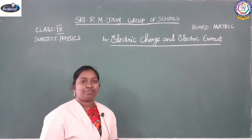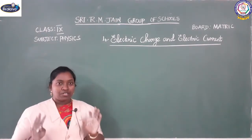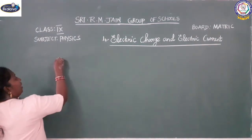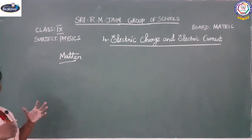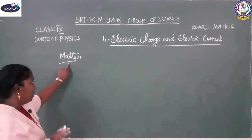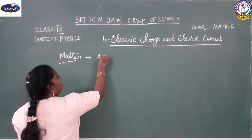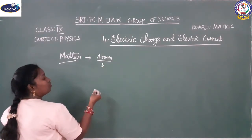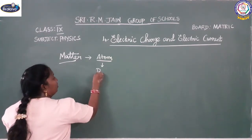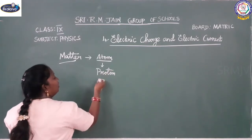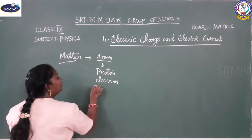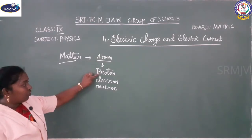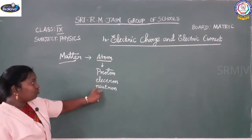Around us, the matter which surrounds us — all things are made up of matter. All matter is made up of atoms. So the things surrounding us are all made up of matter, and this matter is made up of atoms. Now, an atom is also made up of particles called protons, electrons, and neutrons.